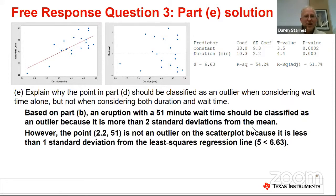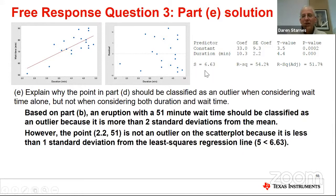We can also note that this point is somewhat influential on the slope of the regression line — it pulls the line downward and makes the slope more positive. It's also a high leverage point because it's very far from the mean x value. But it's not an outlier according to the course and exam description because it has a fairly small residual. So in the one-variable situation, this eruption looked like an outlier; in the bivariate relationship, we would not classify it as an outlier.